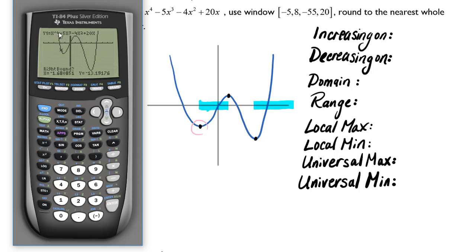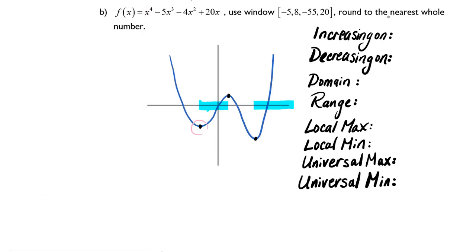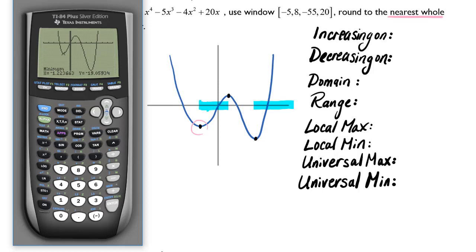And see how it set up a little arrow? Now it's going to ask me where the right bound is. So I'm going to arrow to the right until I've passed the minimum and I hit enter again. Now it wants me to guess where the minimum actually is. Now I have two arrows saying I've bounded where this minimum value will be. So I'm just going to arrow down until it looks like my cursor is pretty close to the minimum. When I hit enter for the last time it gives me a minimum value to six decimal places. The question asks us to give the rounded values to the nearest whole number. So when I label this minimum, it's going to be at negative one, negative 19.